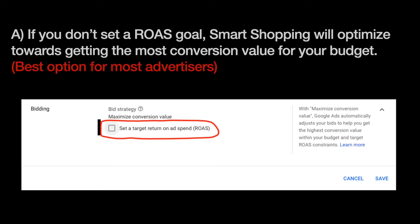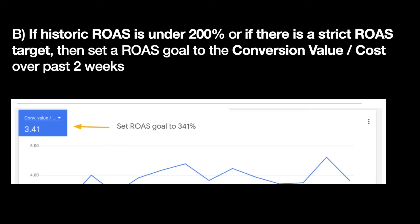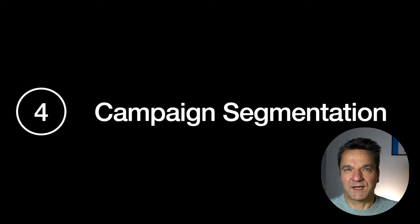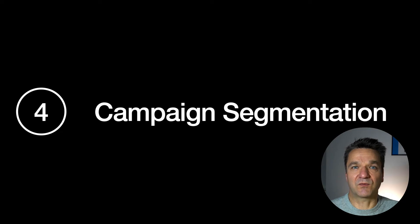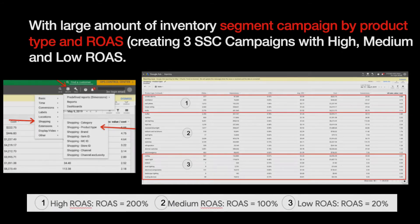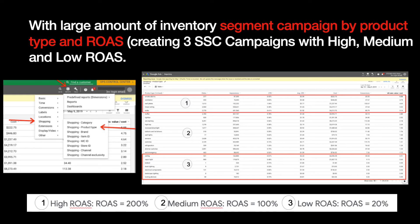A month later you can evaluate your performance and apply a ROAS target. If there is a strict ROAS target or historical ROAS has been under 200%, then set your target ROAS under the historical TROAS for the last two weeks. If your feed has multiple products and product types and you have historical performance, the best approach is to segment your campaign by product types and then by ROAS, and set up a process to periodically update these products to apply different target ROAS.